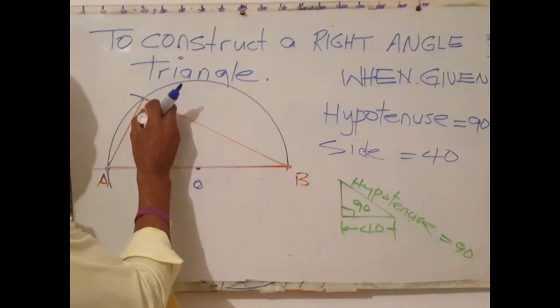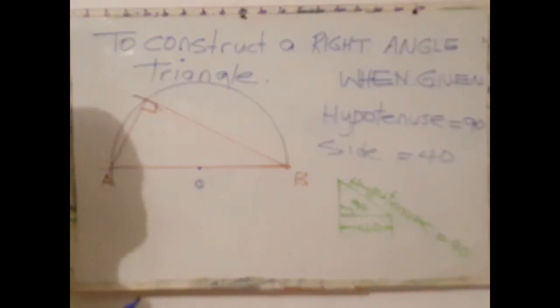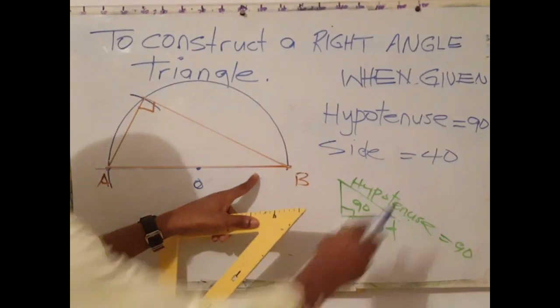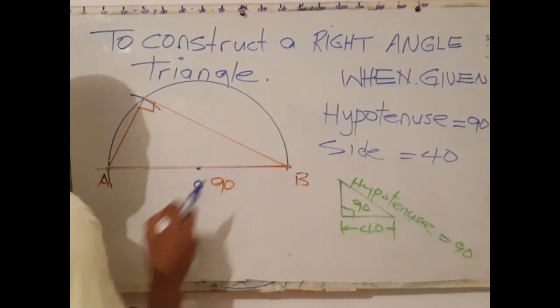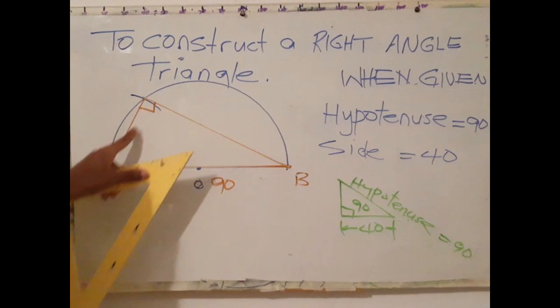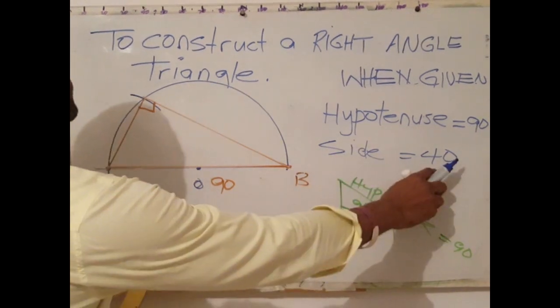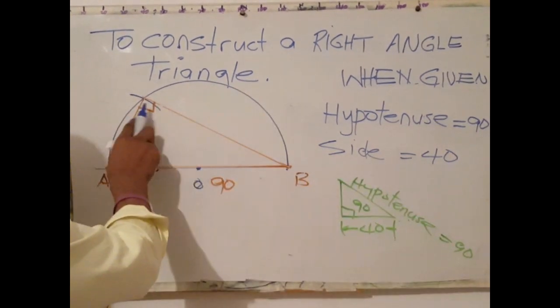The angle formed here is 90 degrees. So this length, which is the hypotenuse, is 90 millimeters. The length of this side is 40. And as you can see, we have a perfect right angle.